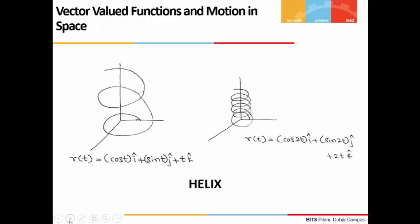Here, in this slide, we have two figures. The first one gives us the position vector r(t) = cos(t)i + sin(t)j + tk. And in the second one, we see that r(t) = cos(2t)i + sin(2t)j + 2tk. In the second position vector, t is a multiple of 2, and that shows that in the figure, you can see the curves are closely packed.